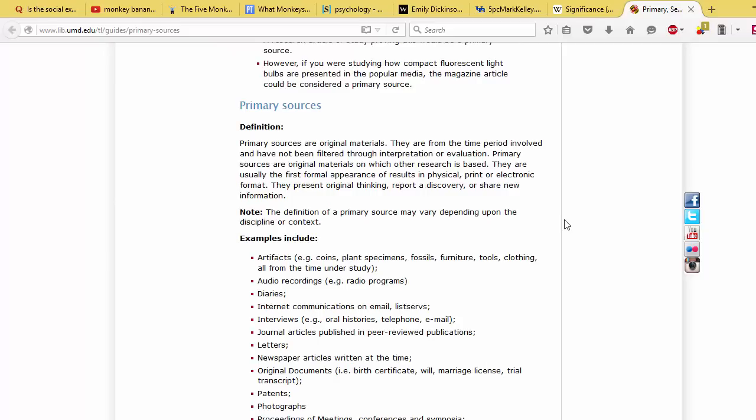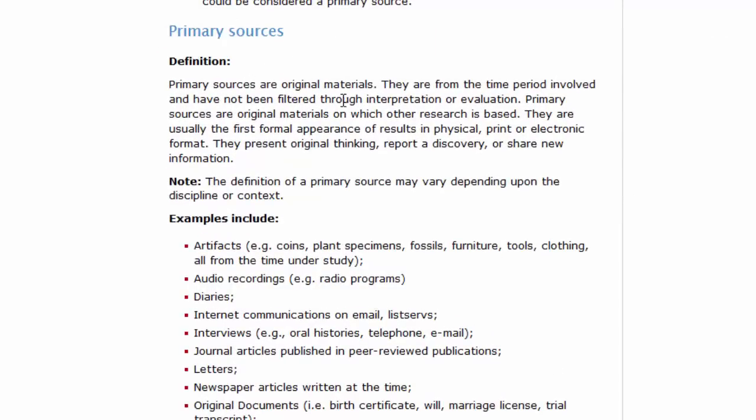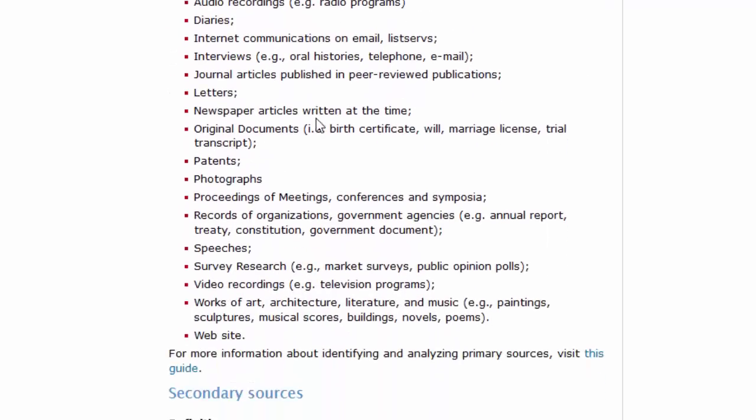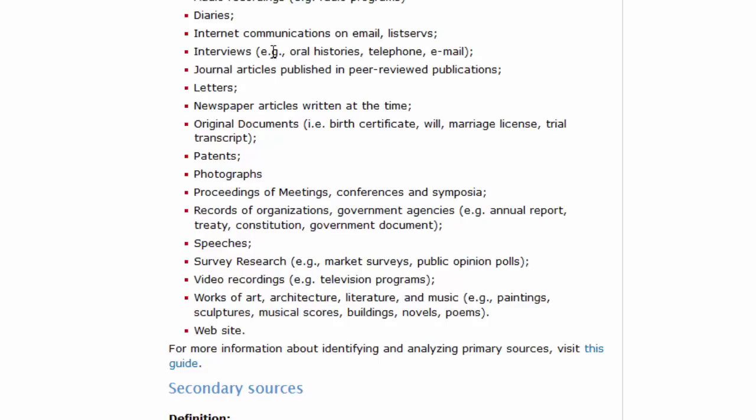Now for the benefit of those of you who won't take the time to read this article, let me just quote what they use as a definition for a primary source. Primary sources are original materials. They are from the time period involved and have not been filtered through interpretation or evaluation. Primary sources are original materials on which other research is based. They are usually the first formal appearance of results in physical, print or electronic format. They present original thinking, reported discovery, or share new information. Note the definition of a primary source may vary depending on the discipline or context. Examples include artifacts, audio recordings, diaries, internet communications on email, interviews, journal articles published in peer-reviewed publications, letters, original documents, patents, photographs, and so on.